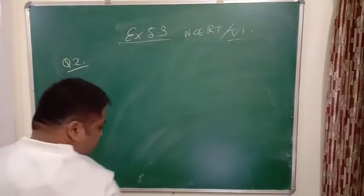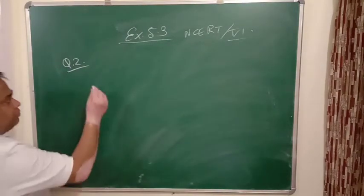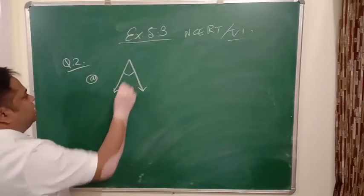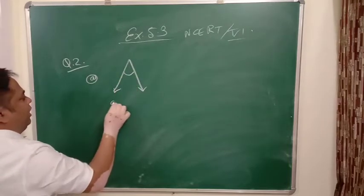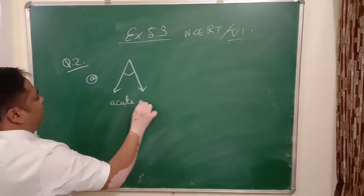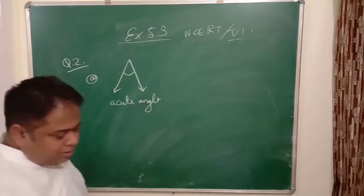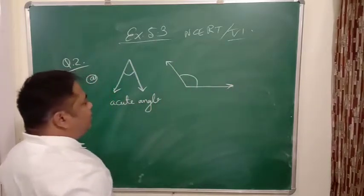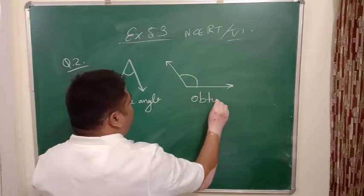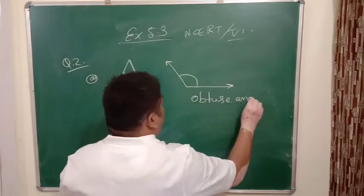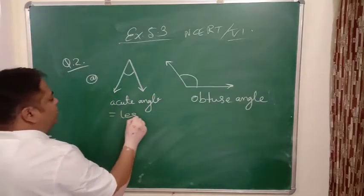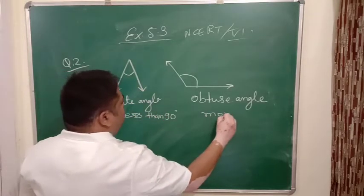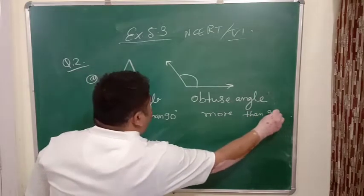So first one is drawn like this. Since this is less than 90 degrees, it will be acute angle. This should be less than 90 degrees.